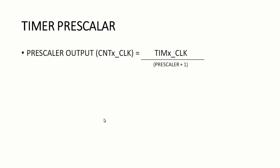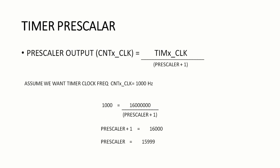Using this formula, you can scale down the timer peripheral clock by updating the required prescaler value. I want to run the timer clock at 1000 Hz, that is 1 kHz. The prescaler output must be 1000, and the timer clock — the APB1 timer clock — is 16,000,000 Hz. Using this formula, we get the prescaler value to be 15,999. If we set the prescaler value to 15,999, Timer 6 will be running at a frequency of 1 kHz.